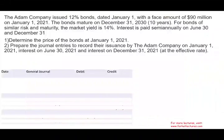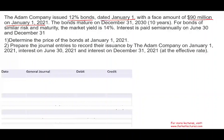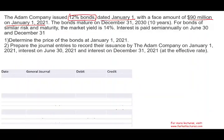Let's go ahead and get started. The Adam Company issued a 12% bond dated January 1st with a face value of $90 million on January 1st, 2021. The company wanted to raise money and decided to borrow. They're willing to pay 12% — that's how much they're willing and able to pay — and the bond will be issued January 1st.